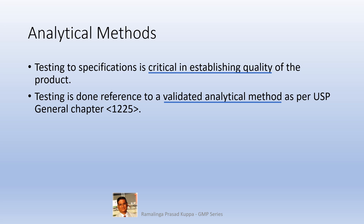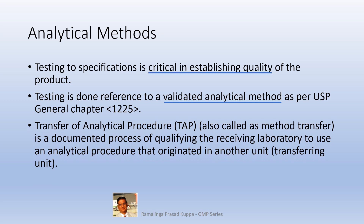Typical characteristics described in USP 1225 are precision, accuracy, specificity, detection limit, quantitation limit, linearity, range, and robustness. These are important items required for method validation, and all such methods must be validated before being put into routine release testing. Transfer of analytical procedures, also called method transfer, is a documented process of qualifying the receiving laboratory to use the analytical procedure that originated in the transferring unit. Transfer is done for a validated test method only.